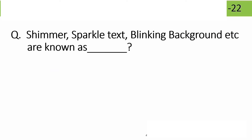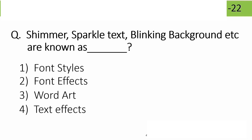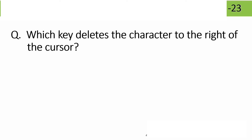Shimmer, sparkle, blinking text, and blinking background are known as what? The correct answer is text effects — shimmer, sparkle, and blinking background are text effects in MS Word.